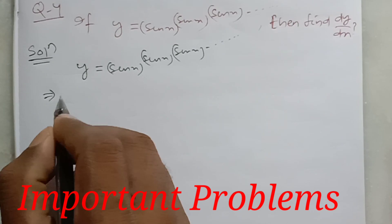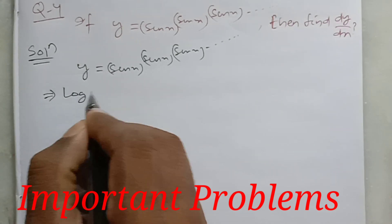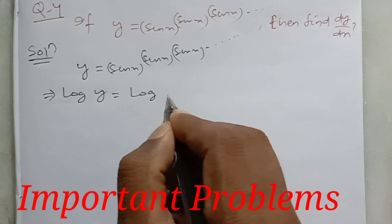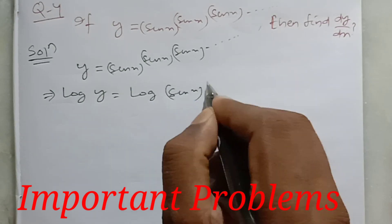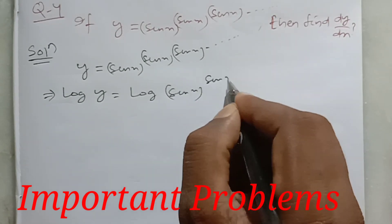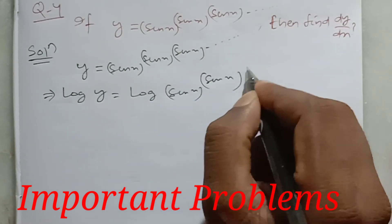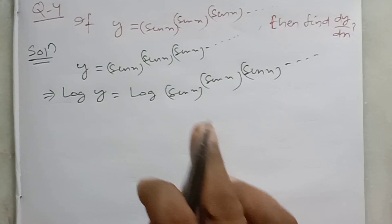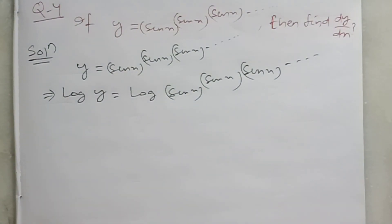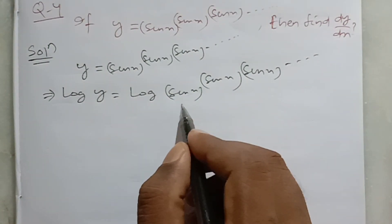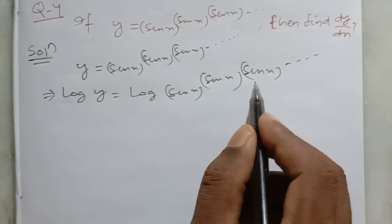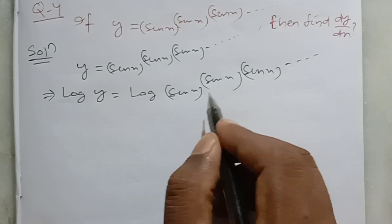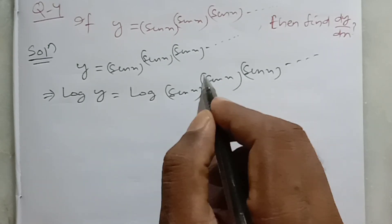Taking natural log on both sides we get: log y is equal to log of sine x to the power sine x to the power sine x, up to infinite number of sine x. Now look at here — sine x to the power sine x to the power sine x for infinite number of sine x.